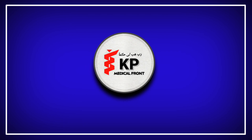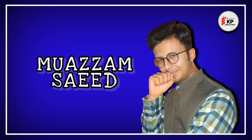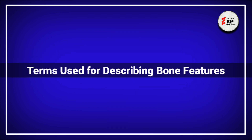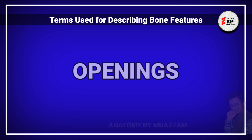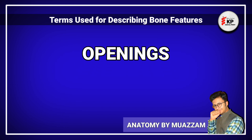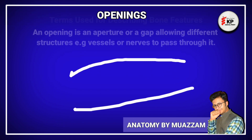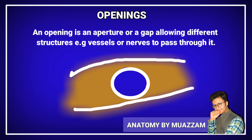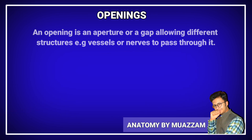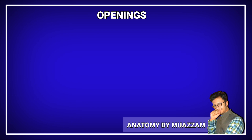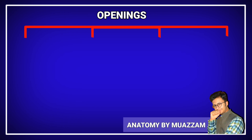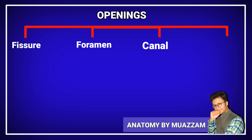Welcome to KPP Medical Friend official YouTube channel. Today we will discuss different terms used for describing bone features, specifically the different types of openings in bones. An opening is defined as an aperture or gap allowing structures such as vessels or nerves to pass through it. In human bones there are four types of openings: the fissure, the foramen, the canal, and the meatus.